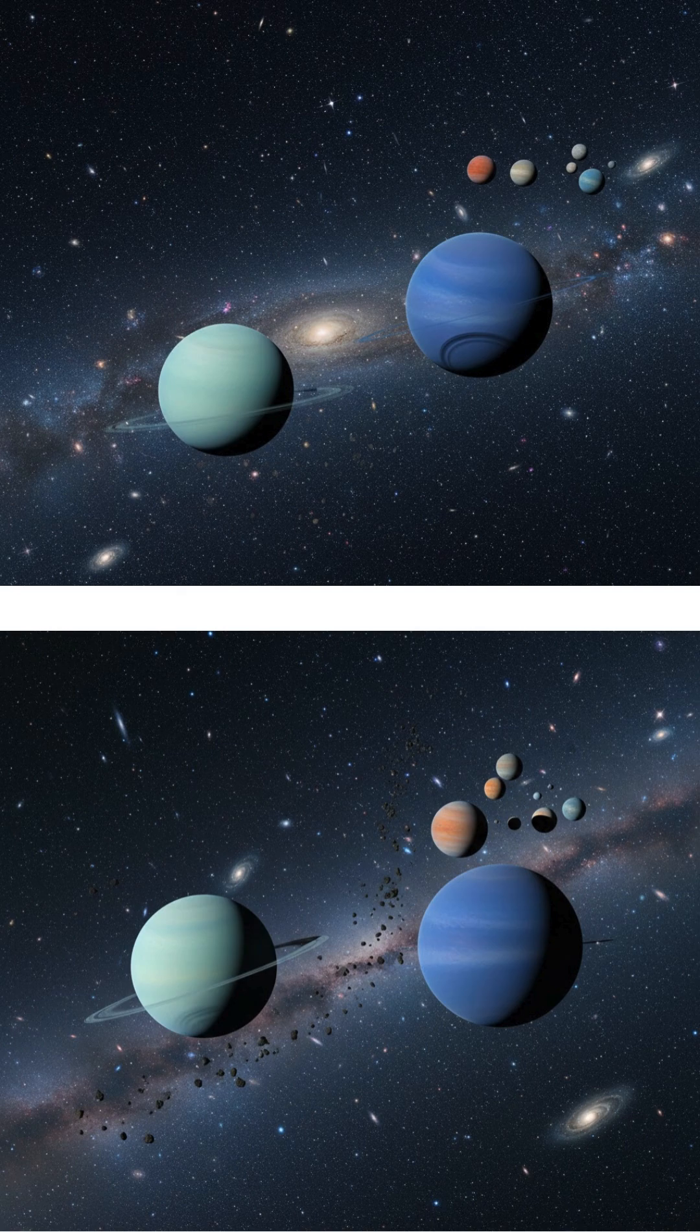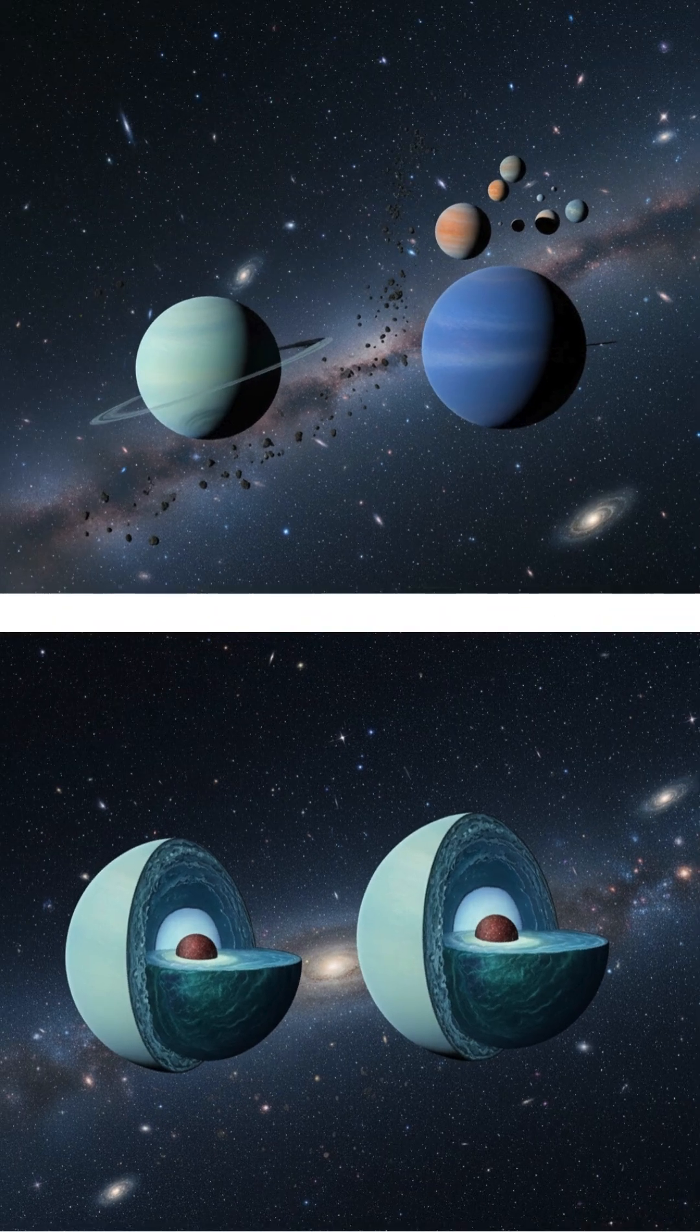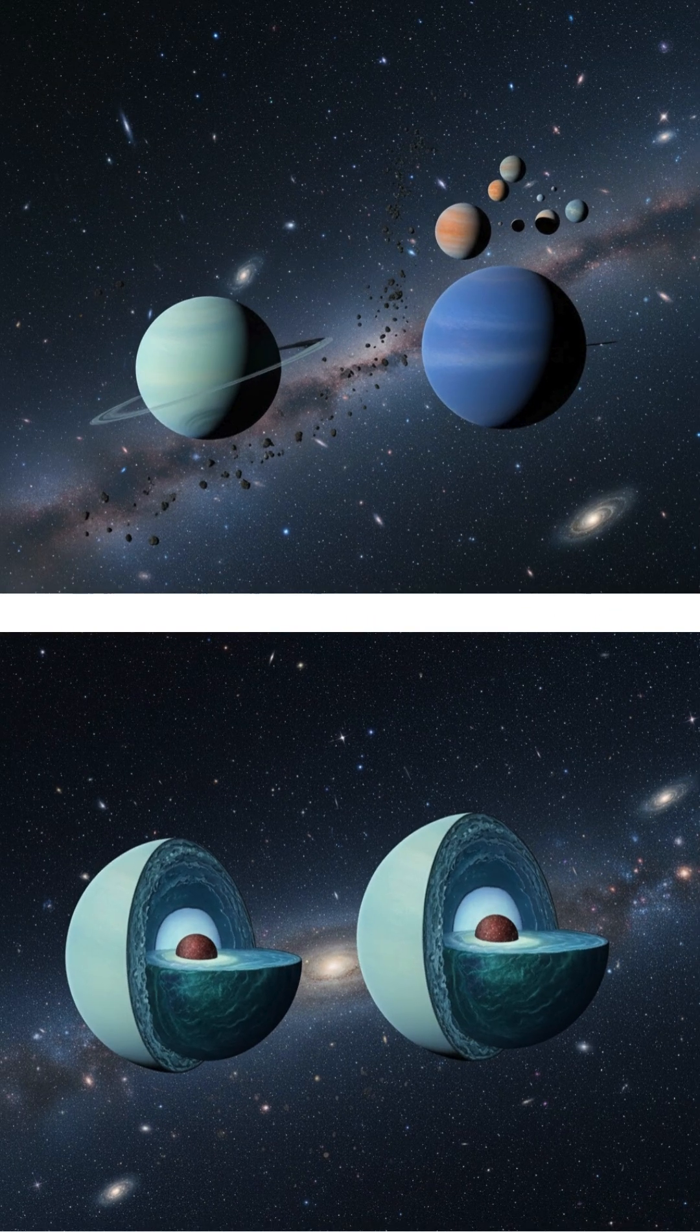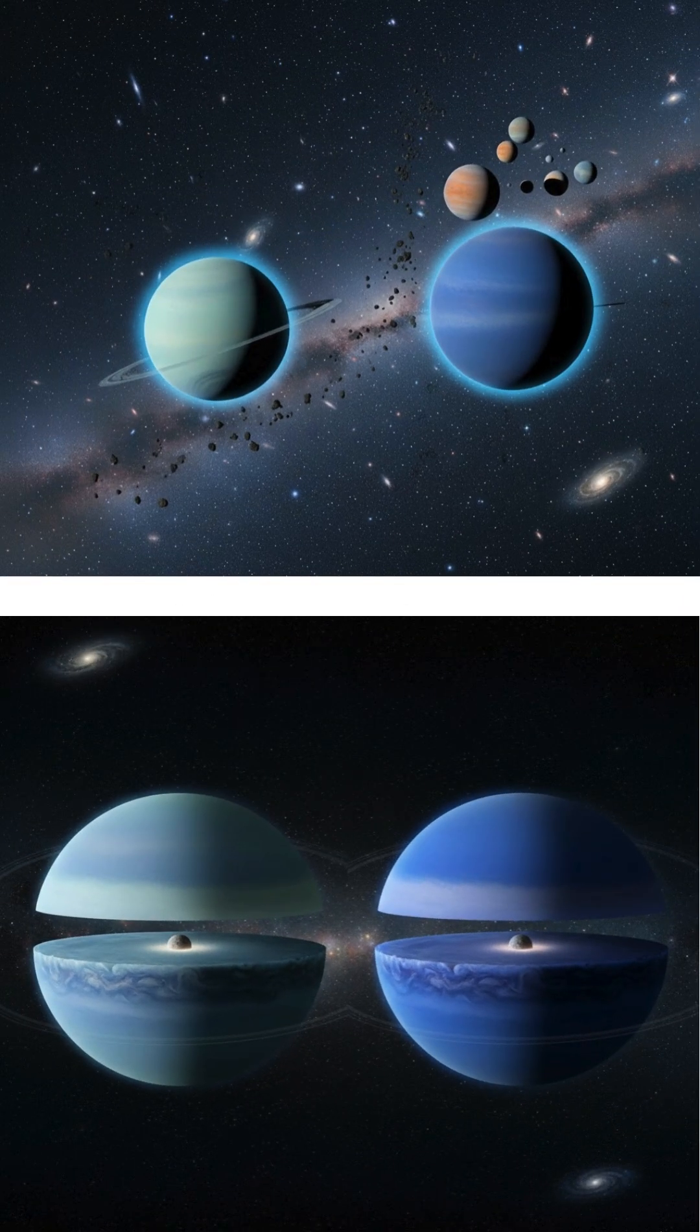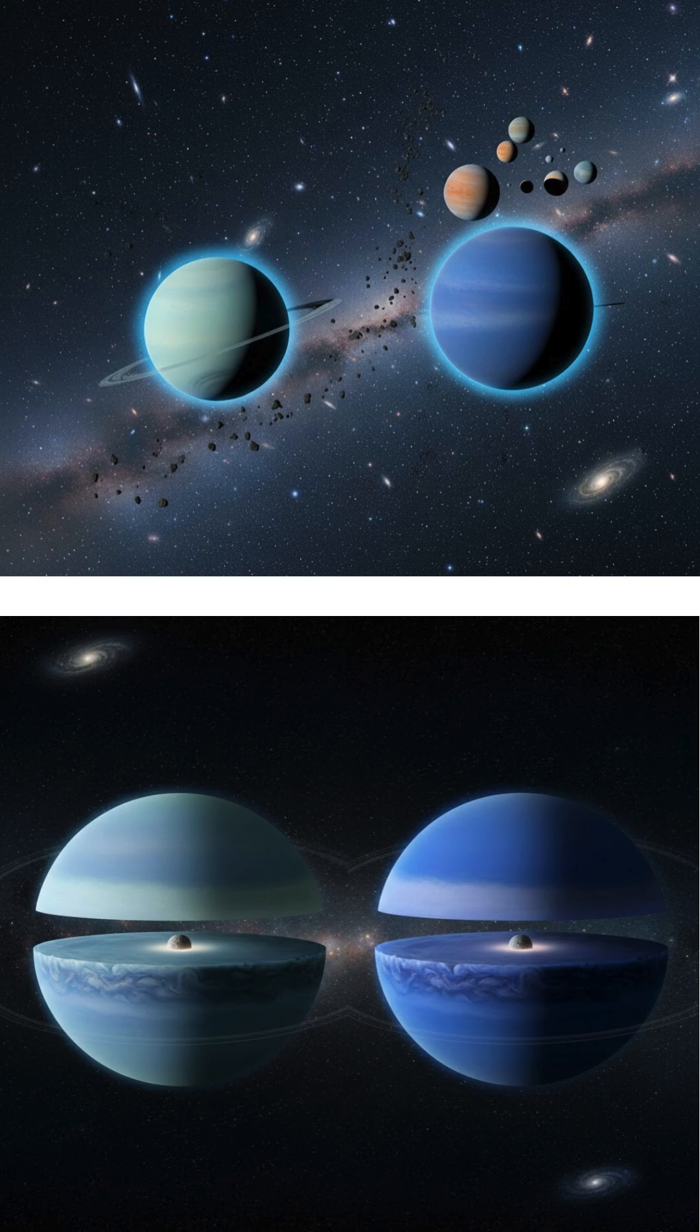Further out are the two ice giants, Uranus and Neptune. They are composed largely of ices such as water, ammonia, and methane, which give them their distinct blue-green hues. They have thinner outer layers of hydrogen and helium compared to the gas giants.